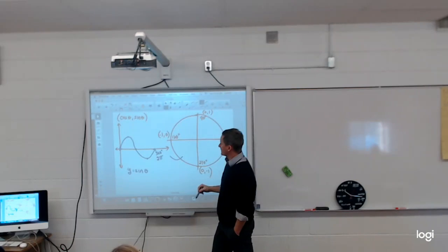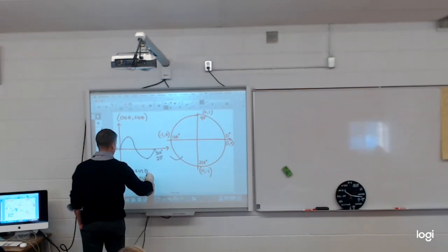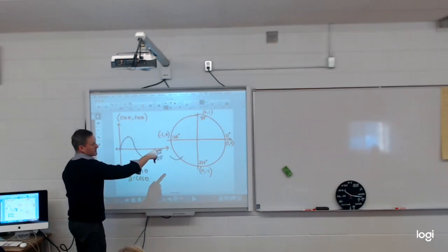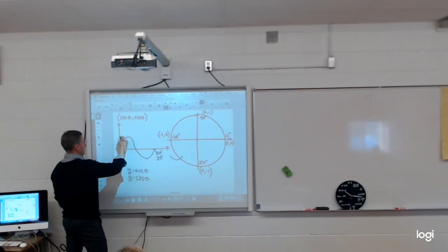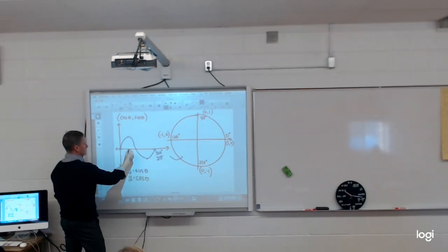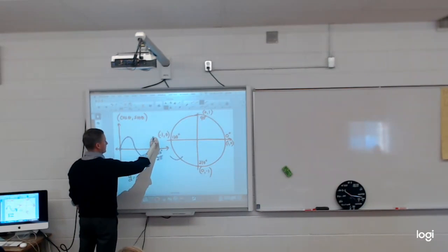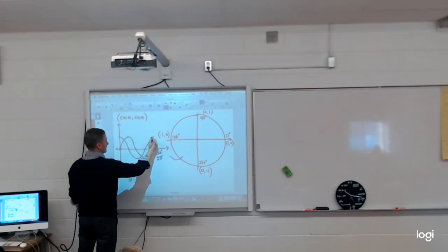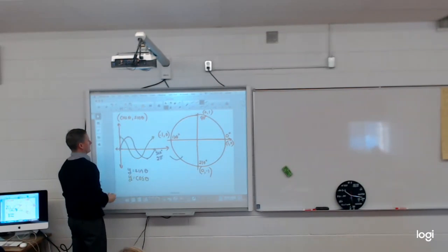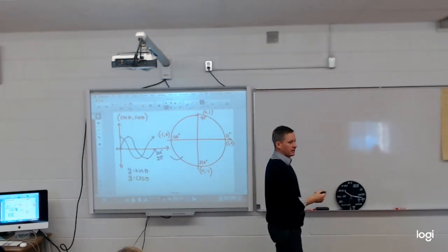Now if I look at cosine theta, what's the x value at 0 degrees? 1. At 90, 0. At 180, negative 1. At 270, 0. And back to 1. Once I put the arrows on them, meaning it goes forever left and right.